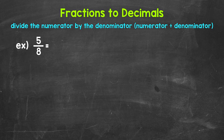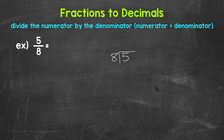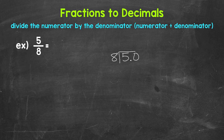So for 5 eighths, we can set this up as 5 divided by 8. Now we can go through the division process. How many whole groups of 8 in 5? How many eighths in 5? Well, we can't do that. So we need a decimal and a zero in order to work through this.